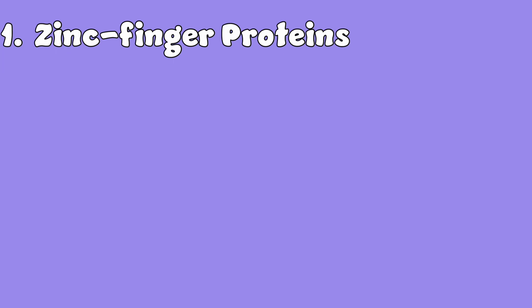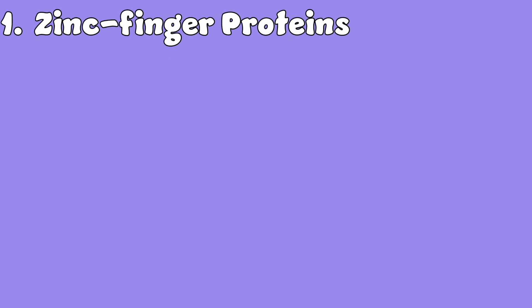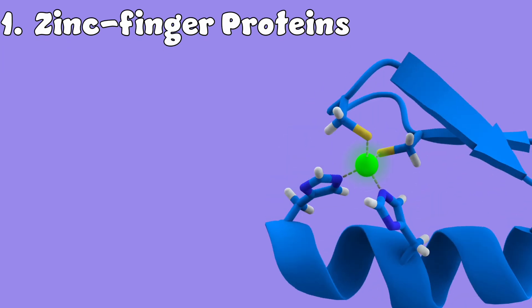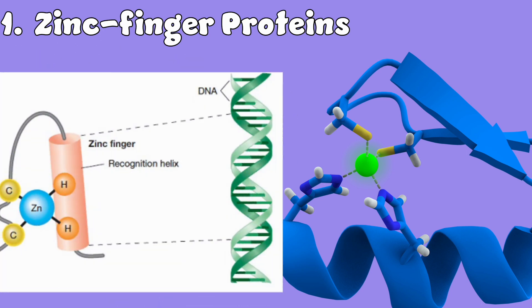There are several proteins that interact with DNA that have shapes. The first is the zinc finger protein, which is associated with zinc ions throughout the protein with regions that are helical and bind to sequences that it recognizes. It is characterized by the presence of zinc ions, which help stabilize the structure. A zinc finger typically consists of a loop of amino acids with zinc ions coordinated by cysteine or histidine residues. The finger-like structure can fit into the major groove of the DNA, allowing it to interact with specific sequences. Zinc fingers are common in transcription factors and can recognize a wide range of DNA sequences.